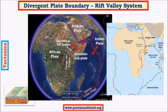The rift starts at around Jordan, extends till the Afar region in Ethiopia, then continues along the Gulf of Aden. It then extends as the Ethiopian Rift into Africa, where it splits into two rifts: one is called the Albertine Rift on the western side, and the eastern rift is called the Kenyan Rift. This rift extends till the river basin of the Zambezi, where river Zambezi flows. This entire rift system is about a few thousand kilometers in length.